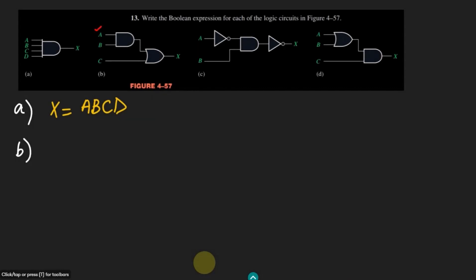Initially we can see that we have three inputs which are A, B and C. A and B is given to this AND gate, so the output of it will be A multiplied by B. So AB will be multiplied together.